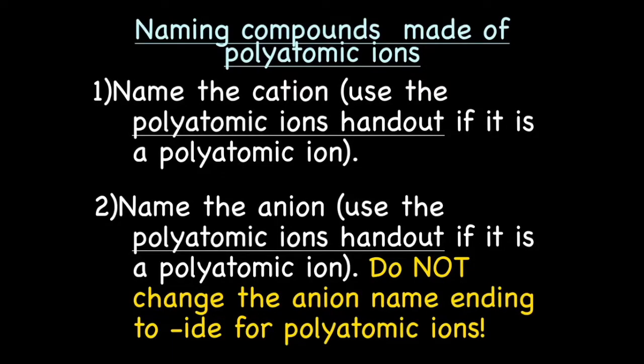Let's try to name a compound made up of polyatomic ions. First step in naming an ionic compound made up of polyatomic ions is to name the cation, just like we did for the simple ions. If the cation is a polyatomic ion, you need to use the handout for its name. If the cation is a simple ion, you're going to use the rules we already talked about, which is if the metal comes from group 1A, 2A, or 3A, you get the name directly off the periodic table.